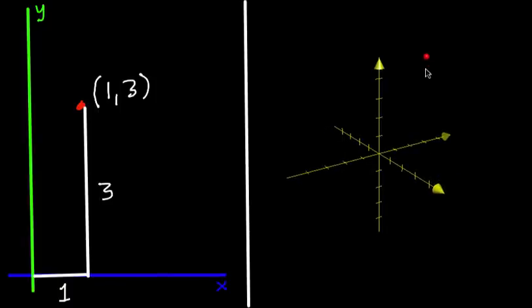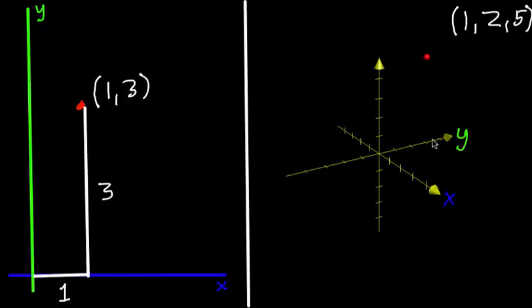But we describe points like this, again with a set of coordinates, but this time it's a triplet. And this particular point, I happen to know, is one, two, five and what those numbers are telling you is how far to move parallel to each axis. So just like with two dimensions, we have an x-axis and a y-axis. But now there's a third axis that's perpendicular to both of them and moves us into that third dimension, the z-axis.